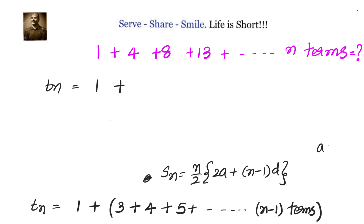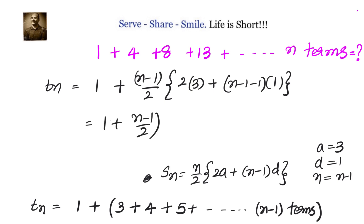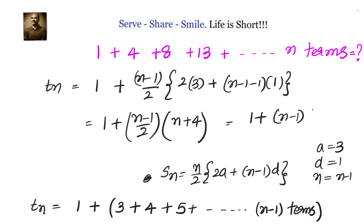Here, our first term a is 3, the common difference d is 1, and the number of terms is n minus 1. Substituting: tn equals 1 plus (n minus 1) over 2 times (2 times 3 plus (n minus 1 minus 1) times 1), which simplifies to 1 plus (n minus 1)(n plus 4) divided by 2.